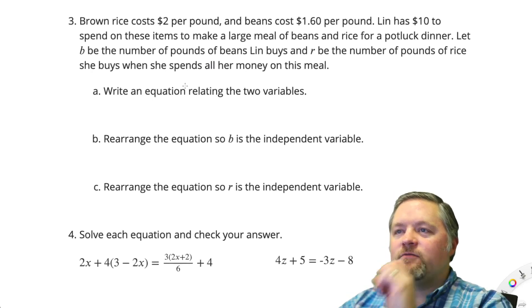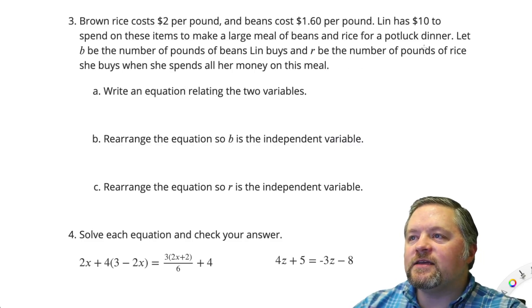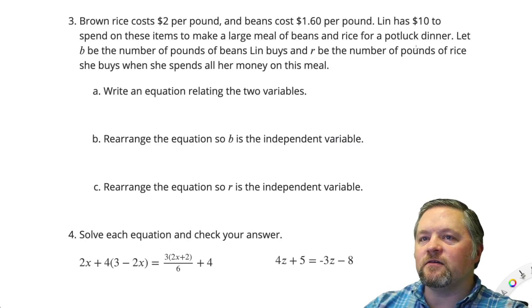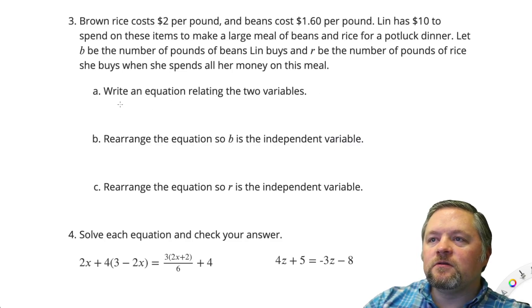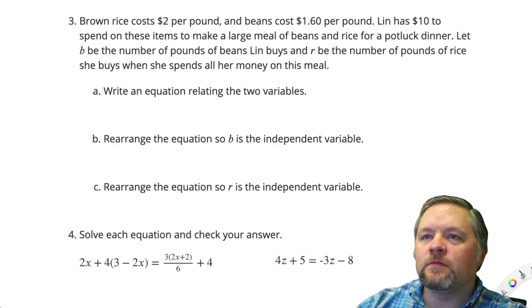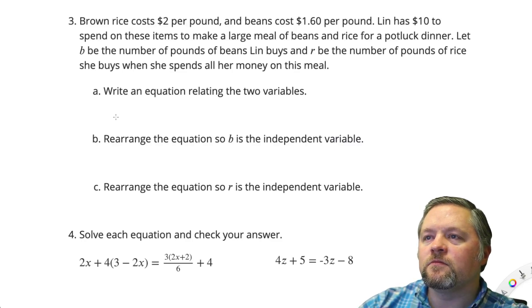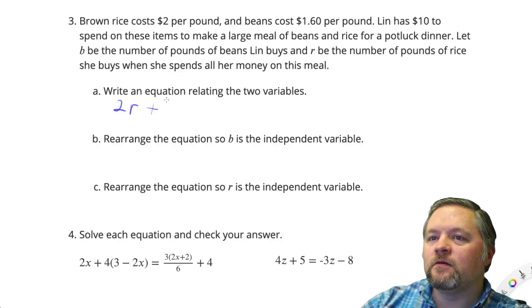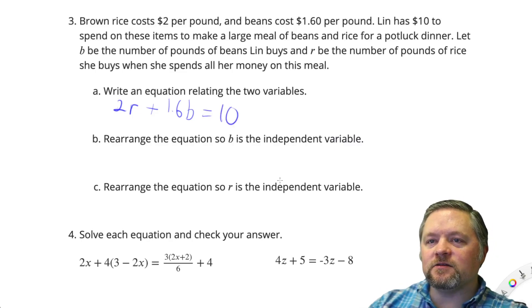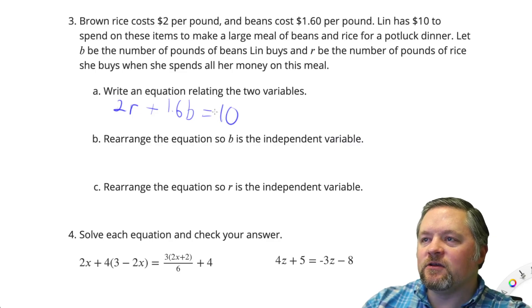Brown rice costs $2 a pound and beans cost $1.60 per pound. Lynn has $10 to spend on these items to make a large meal of beans and rice for the potluck dinner. Let B be the pounds of beans and R be the pounds of rice. Let's write an equation relating the two variables. $2 times rice, the number of pounds of rice, plus 1.6 times the number of pounds of beans equals $10. $2 per pound of rice, $1.60 per pound of beans. We have $10 to spend.